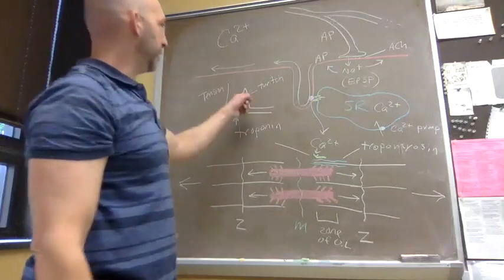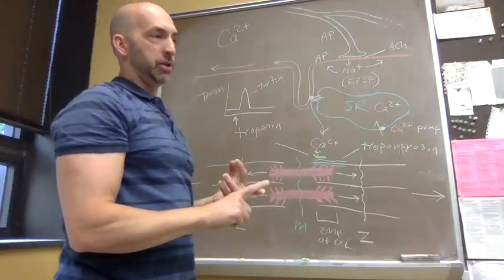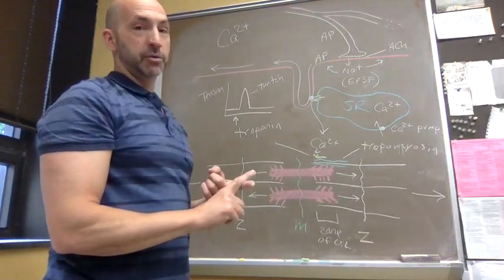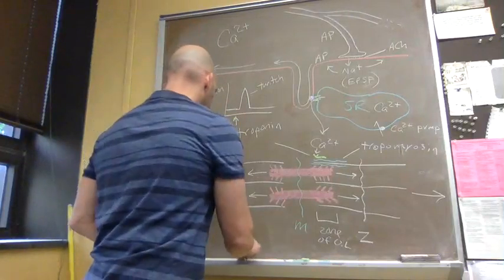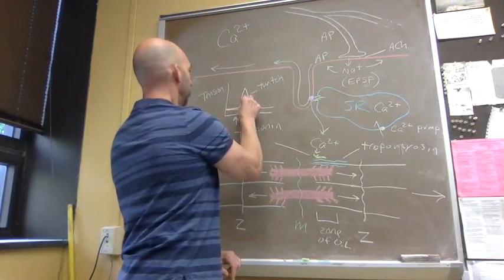Those twitches can vary in both strength and duration based upon which fiber type we're talking about—slow twitch fibers or fast twitch fibers. So if this is a fast twitch fiber, a slow twitch fiber on the same graph would be slower to develop tension.